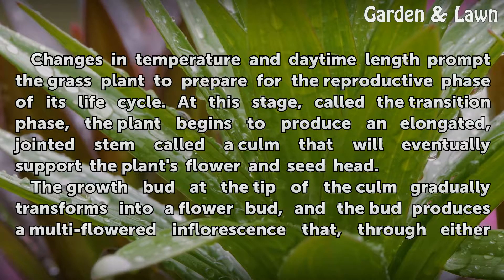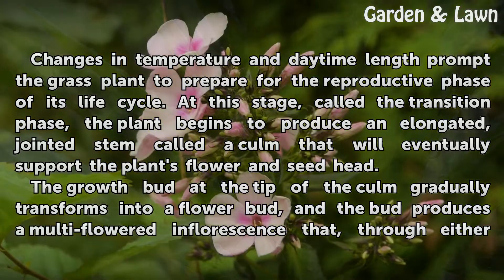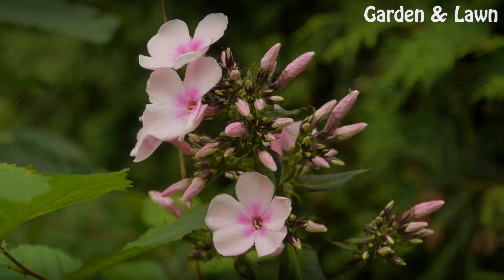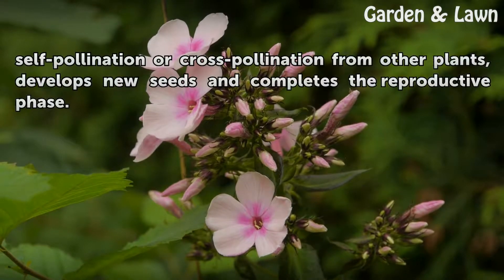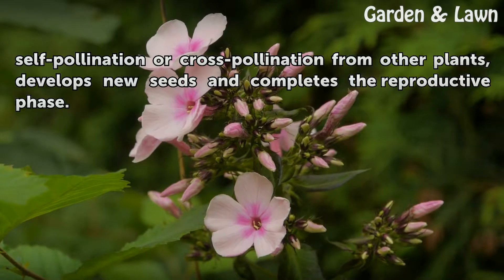The growth bud at the tip of the culm gradually transforms into a flower bud, and the bud produces a multi-flowered inflorescence that, through either self-pollination or cross-pollination from other plants, develops new seeds and completes the reproductive phase.